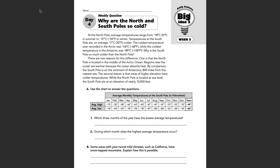At the North Pole, average temperatures range from negative 18 degrees Celsius, which is 0 degrees Fahrenheit, in the summer to negative 37 degrees Celsius or negative 34 degrees Fahrenheit in the winter. Temperatures at the South Pole are on average 17 degrees Celsius or 30 degrees Fahrenheit colder. The coldest temperature ever recorded in the Arctic was negative 56 degrees Celsius or negative 68 degrees Fahrenheit, while the coldest temperature in the Antarctic was negative 89 degrees Celsius or negative 128 degrees Fahrenheit.